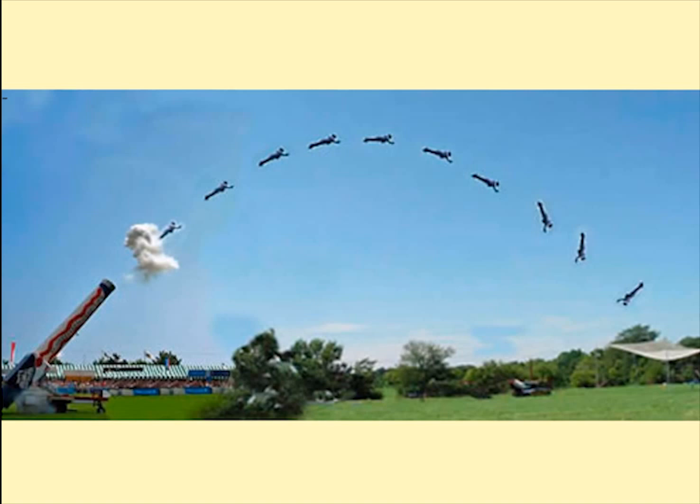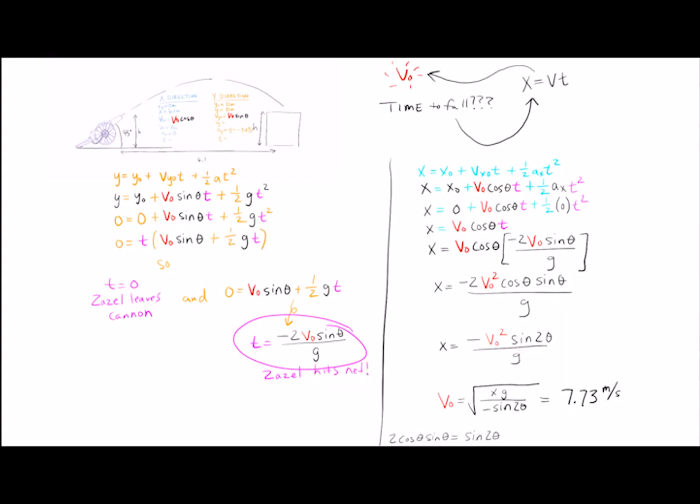Human cannonballs today can now reach a range of nearly 60 meters, about 10 times that of Zazzle. If we wanted to, we could calculate just exactly how fast they leave the barrel.